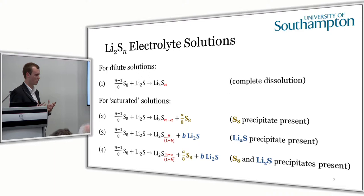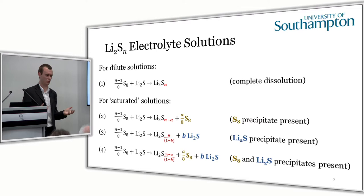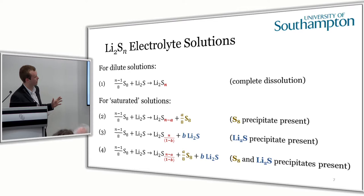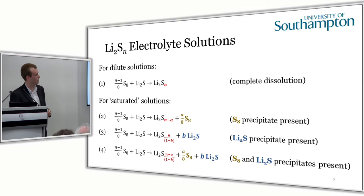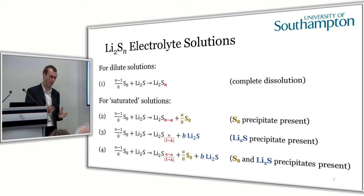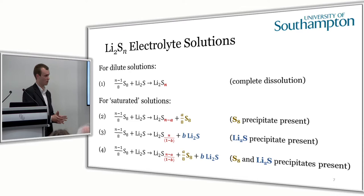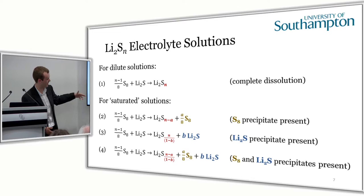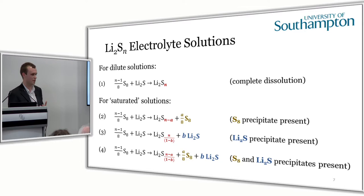In order to prove this phase diagram experimentally, we first looked at making polysulfide electrolyte solutions by dissolving sulfur and lithium sulfide into an electrolyte. An important point is that for dilute solutions where all your sulfur and lithium sulfide dissolve, you know exactly how much sulfur you have and what the average oxidation state is — all the charges come from the lithium sulfide and everything is dissolved. However, as soon as you get any precipitation — whether sulfur, lithium sulfide, or both — you no longer know how much sulfur is present in the electrolyte solution, nor the average oxidation state.